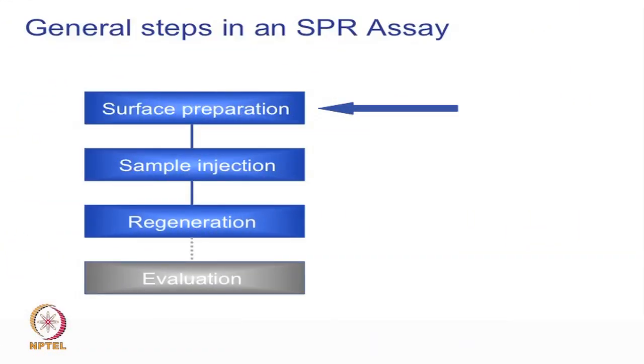The way the experiment is designed will identify whether molecules are binding to one particular site or two different sites on the surface of the sensor. The various steps involved in a Biacore assay are surface preparation, sample injection, regeneration and evaluation. We will start with the surface preparation, which is nothing but immobilization, generally done by two ways: covalent linking and capture method.